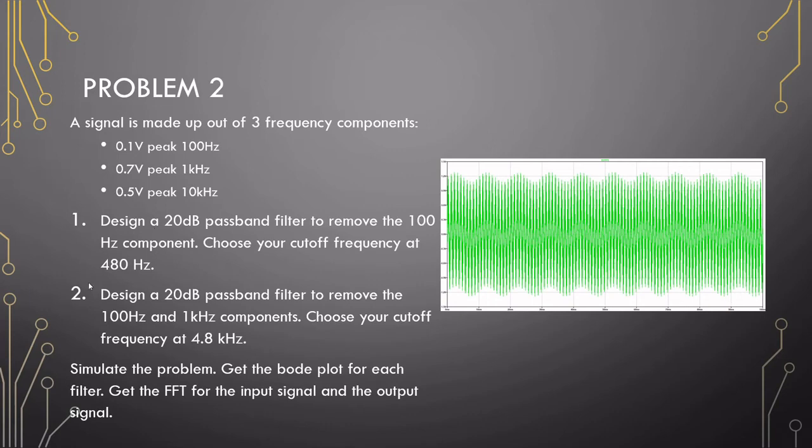The second one is to remove the 100 Hz and the 1 kHz component, so only the 10k component should remain. Design a filter at 4.8 kHz. Pause the video, quickly design the filters and do a simulation to find the Bode plots and have a look at the FFTs.